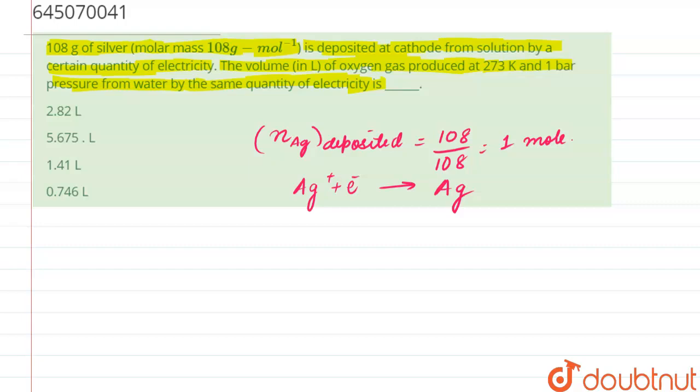Right. So from this we can say that 1F charge is required to deposit 1 mole of Ag.